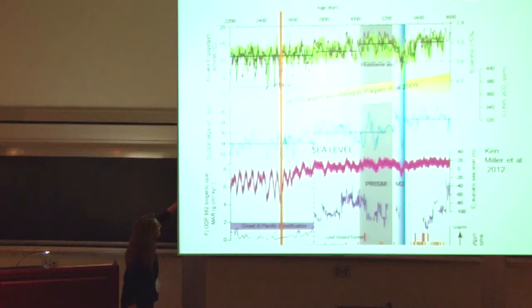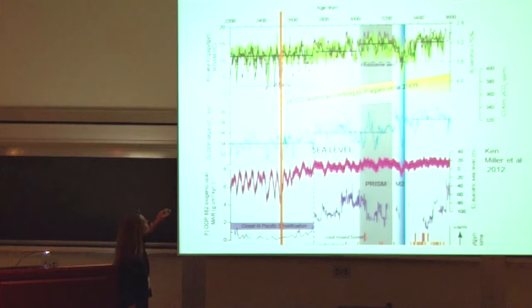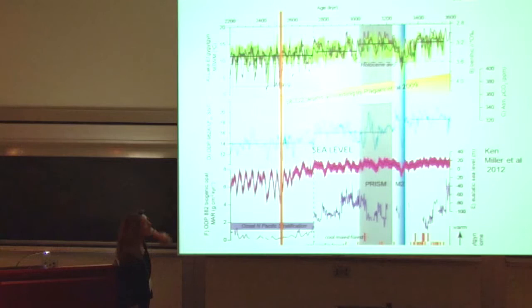The sea level record from Ken Miller and many scientists doing backstripping on various continental shelves would certainly suggest that sea level was only going back and forth about 20 or 30 meters — hardly the 140 meters we saw at the Last Glacial Maximum. Even by two and a half million years ago, sea level was only oscillating about 60 to 70 meters, which doesn't suggest very large ice sheets.